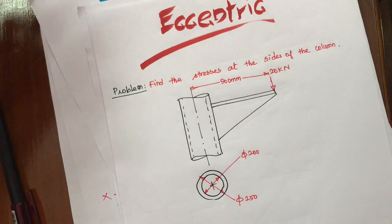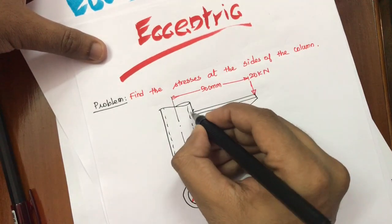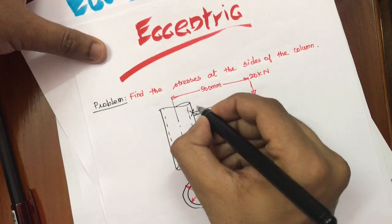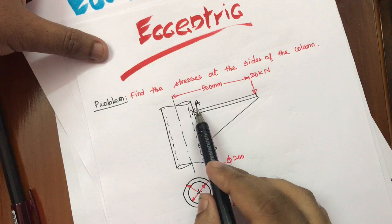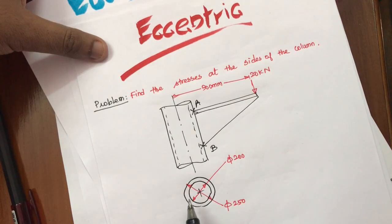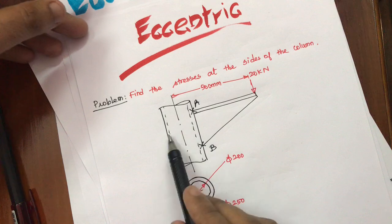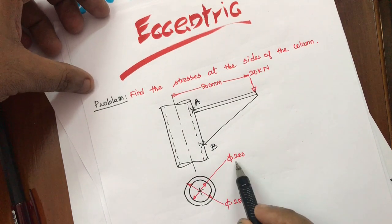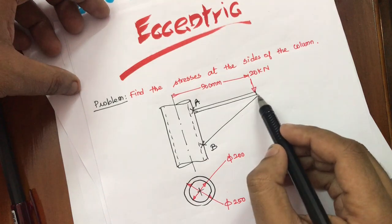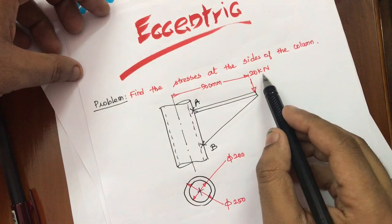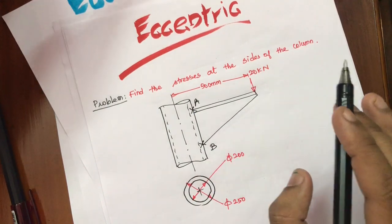Now, coming to the problem. We have to find the stresses at the sides of the column — we consider two points, point A and point B. The cross section of the rod is hollow: inner diameter 200 mm and outer diameter 250 mm. The load acting at the end of the frame is 20 kN, and the eccentricity from the centroidal axis is 500 mm. Since the force is acting where the axis is parallel, this is eccentric loading.